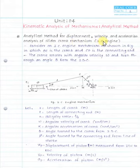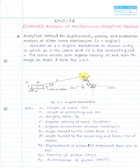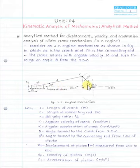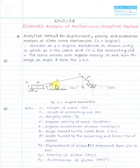The slider crank mechanism is also called the IC engine mechanism. Here point O is a fixed point which is the fixed link. OC is the crank which has crank radius r. CP is the connecting rod which has length l, and P is the piston which slides along the line of stroke. Theta is the angular displacement of the crank or angle turned by the crank with respect to IDC. Angle phi is the angle made by the connecting rod with respect to the line of stroke.